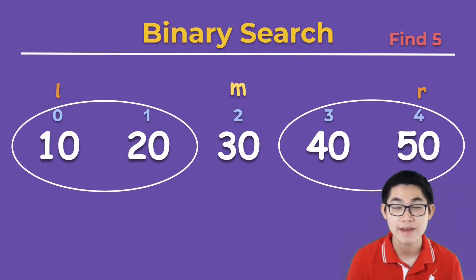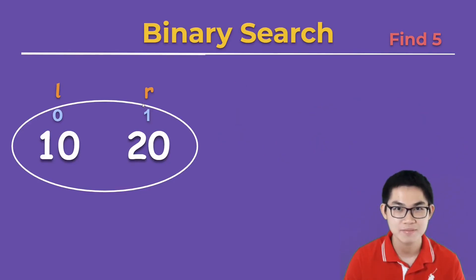Let's do one more example and find number 5. So we already have mid and we split the array into two groups. 5 is smaller than 30 so it has to be in the first group. We simply move R over to here, meaning we choose the first group and we repeat the process.